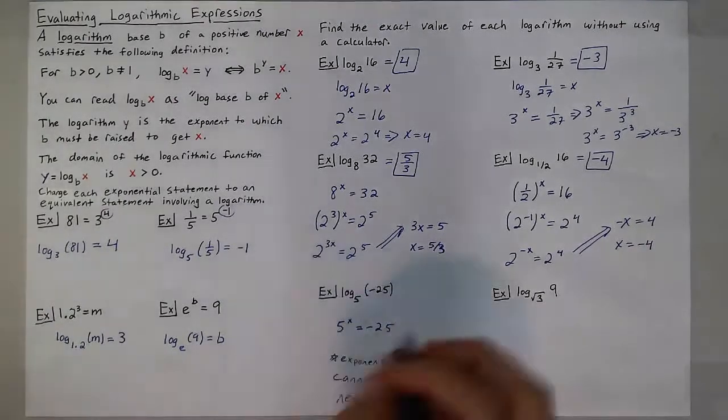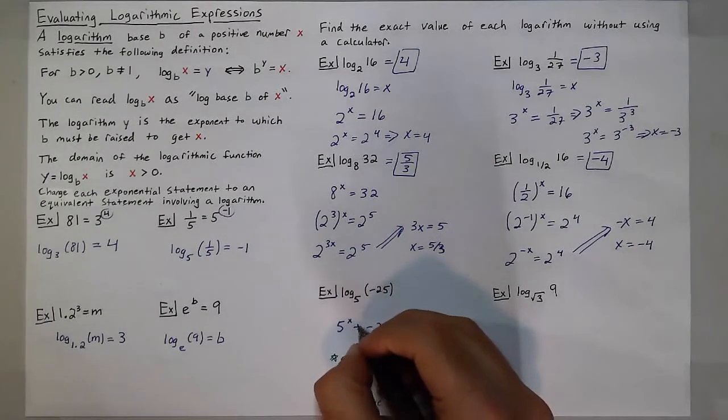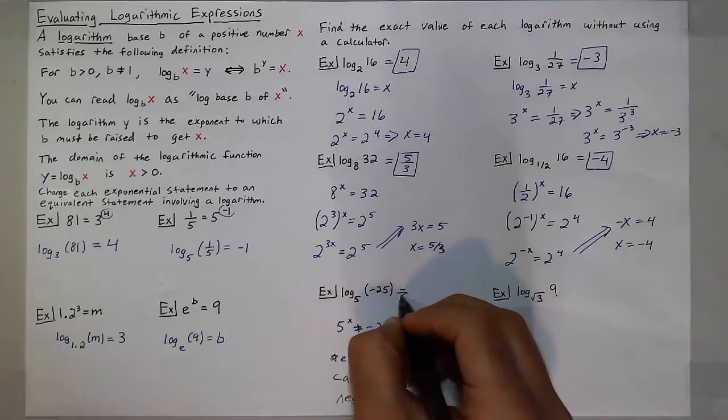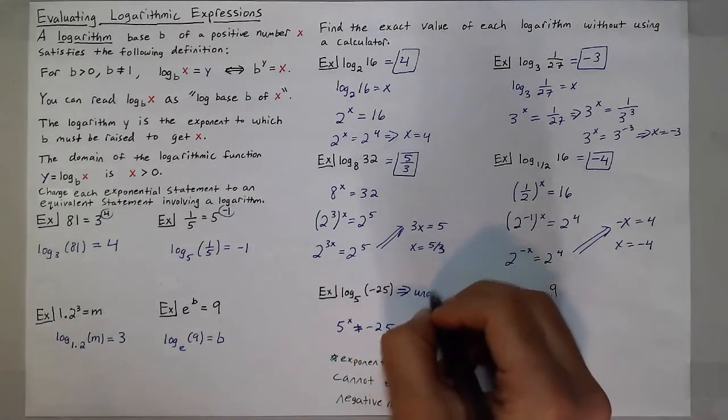So since that is impossible, log base 5 of negative 25 is undefined.